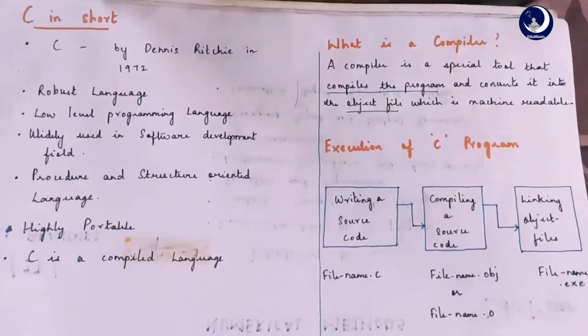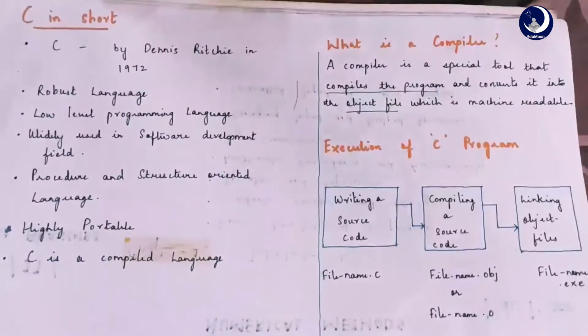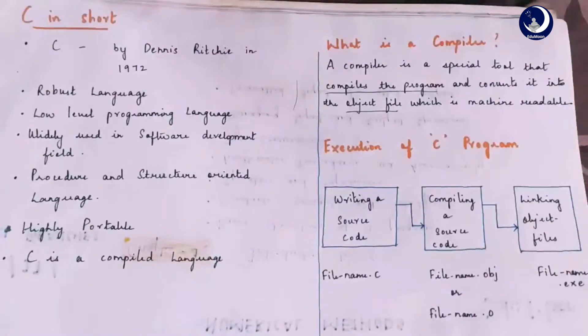C in short, C is developed by Dennis Richie in 1972. It is a robust language which is a lower level programming language. C is widely used in software development field. C is a procedure and structure oriented language which is highly portable.